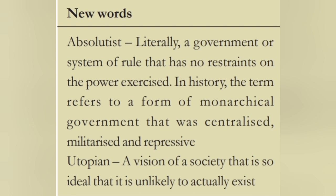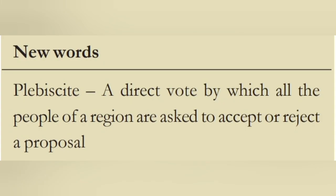New words for 19th century Europe: Absolutist — literally a government or system of rule that has no restraints on the power exercised. In history, the term refers to a form of monarchical government that was centralized, militarized, and repressive. Utopian — a vision of society that is so ideal that it is unlikely to actually exist. Plebiscite — a direct vote by which all the people of a region are asked to accept or reject a proposal.